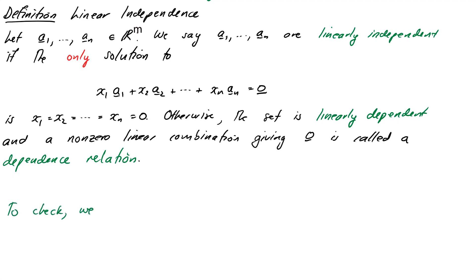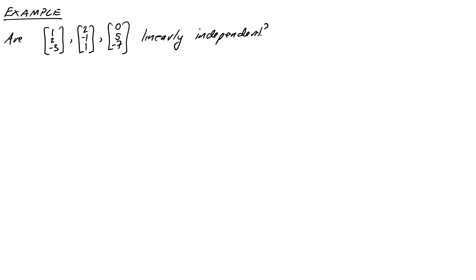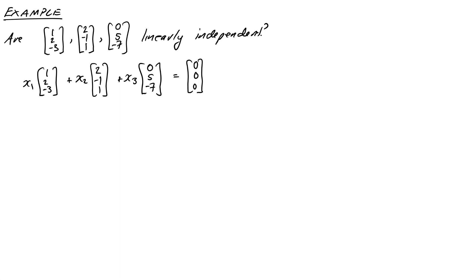So practically speaking, to see if a set of vectors is linearly independent, we need to actually attack that problem and see if we can solve it. This is best done with an example. Are the vectors (1, 2, -3), (2, -1, 1), and (0, 5, -7) linearly independent? Let's try and solve this system. We can represent it as a matrix with the vectors as columns. The linearly independent expression we start with is x1*(1, 2, -3) + x2*(2, -1, 1) + x3*(0, 5, -7) = 0, and we'll try to find whether non-zero solutions exist.